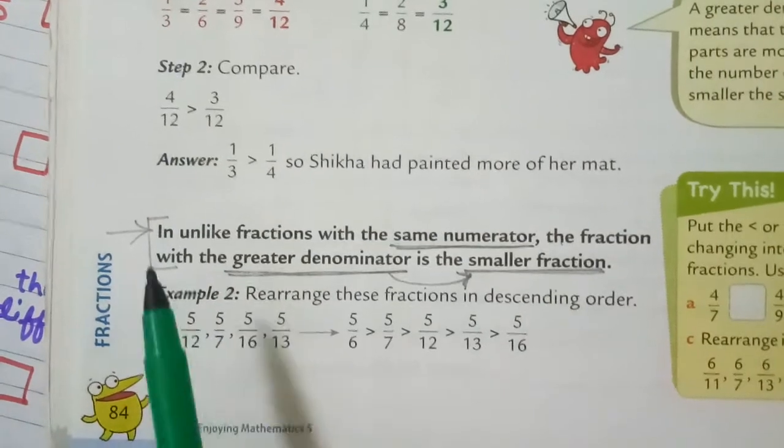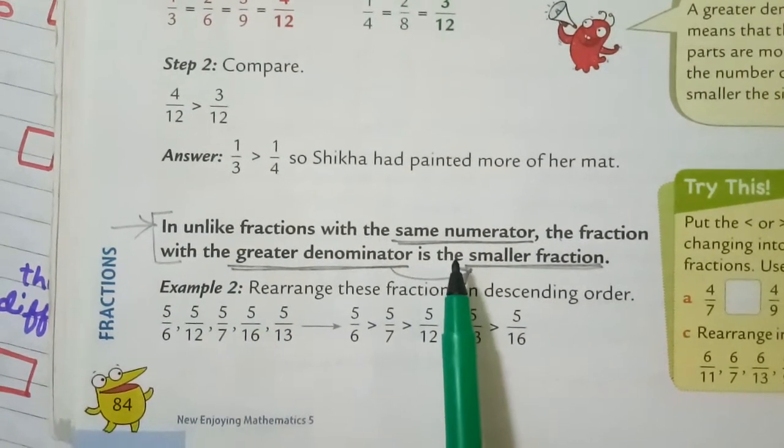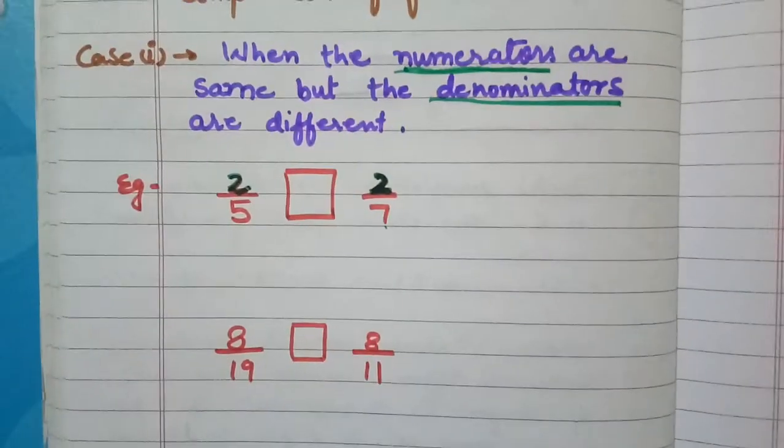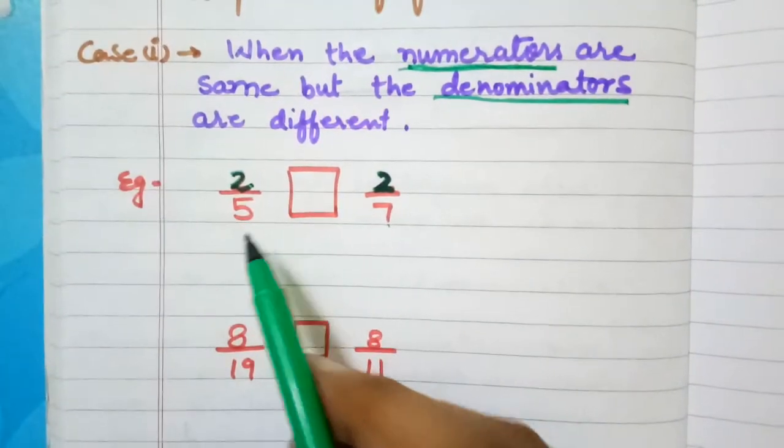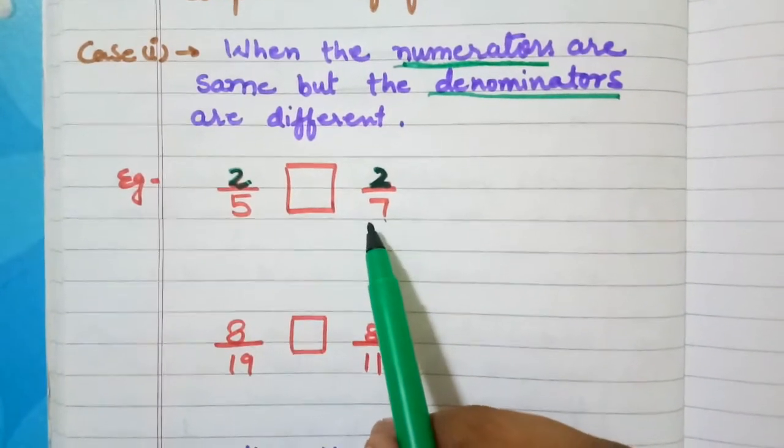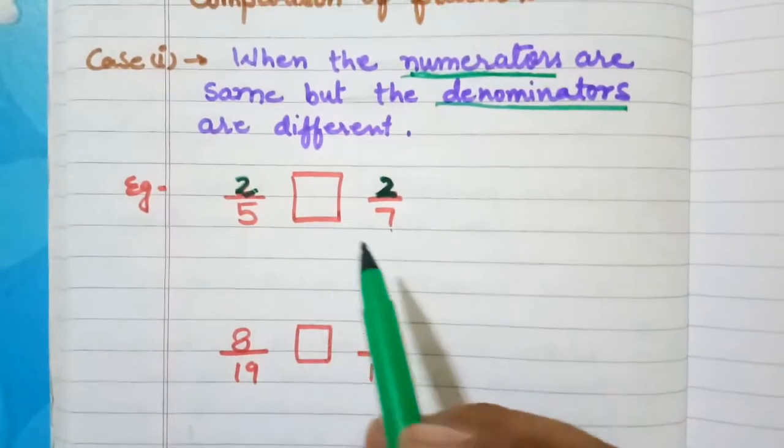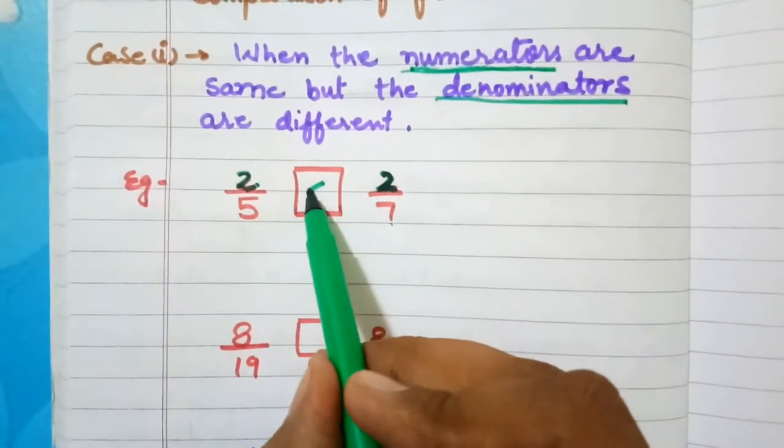When it is an unlike fraction and the numerators are same, if you see the question, it is 2 upon 5 and 2 upon 7. The greater denominator is 7. That means 2 upon 7 is...